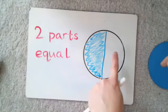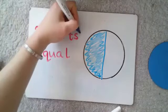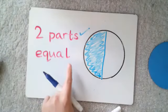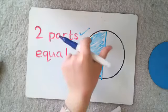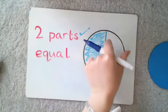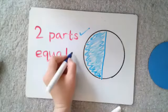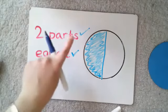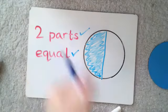Let's count: one, two. Yes I have. Have I split them into two equal parts? I think so, because this side is the same size as that side. There we go! So I've split my circle into two parts.